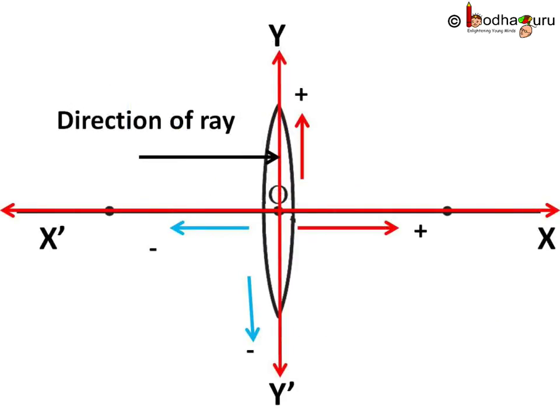Remember we measure all the distances with respect to optical centre. If we imagine O as origin, that is 0,0 point of a Cartesian graph, then the values above O, that is above principal axis, is positive and below principal axis is negative.